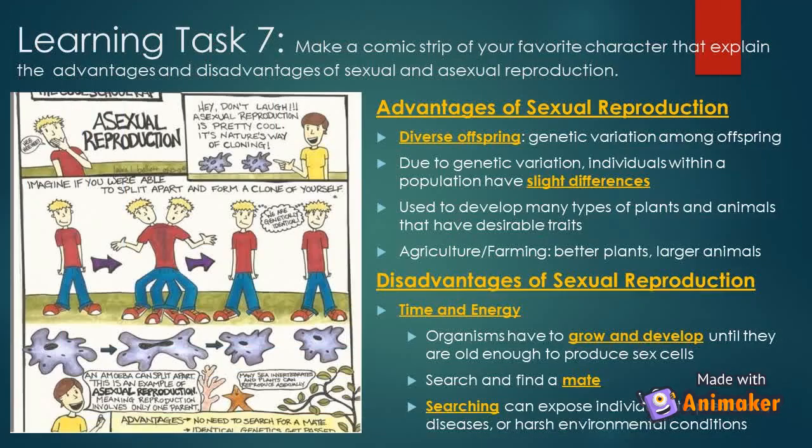Learning task number seven: make a comic strip of your favorite character that explains the advantages and disadvantages of sexual and asexual reproduction. This is just an example comic strip — you make your own. You may include the advantages and disadvantages found on the screen.